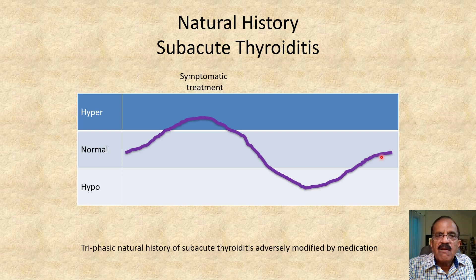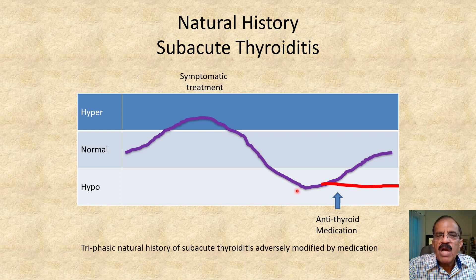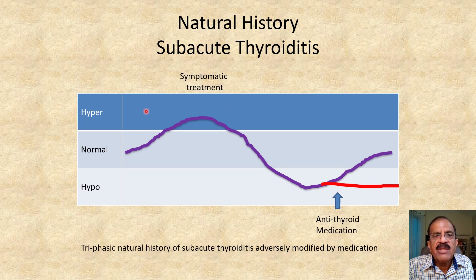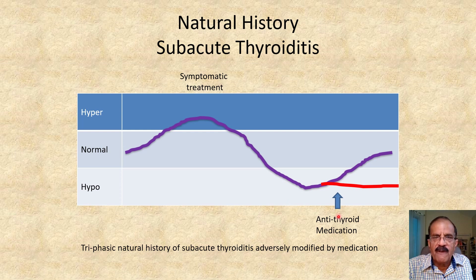Treatment can actually make it worse. For example, if at the hyperthyroid level you start giving antithyroid drugs, the patient will stay in the hypothyroid state — you will have blocked the natural recovery. So you must control your temptation to start antithyroid drugs if the diagnosis is subacute thyroiditis. You should reassure your patient that this is a temporary state, and at this stage if needed you can start propranolol and alprazolam for temporary symptom control. Antithyroid drugs should be avoided because most patients will recover naturally and become euthyroid without any medication.